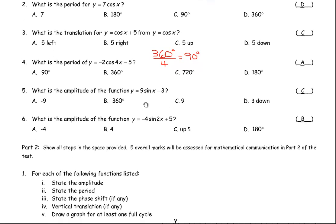For number 5, you're asked: what is the amplitude of y equals 9 sin x minus 3? The amplitude is the number in front — the 9. So C is the correct answer for number 5. Now amplitude is always positive, because it's just a distance. That's what question 6 is about. The function is y equals negative 4 sin 2x plus 5. The negative just reflects the graph across the x-axis; the 4 is still the amplitude. You would not say the amplitude is negative, because amplitude is just a distance. The correct answer for number 6 is 4.